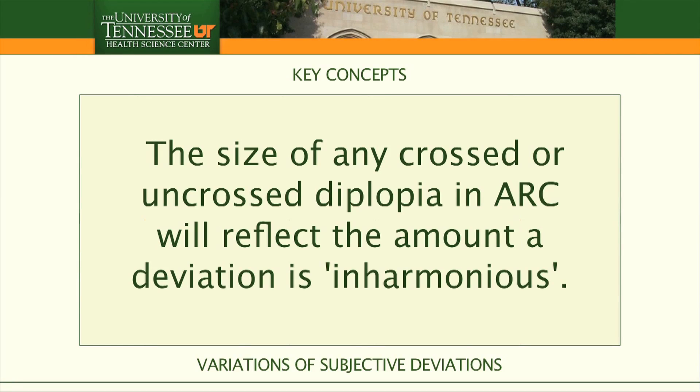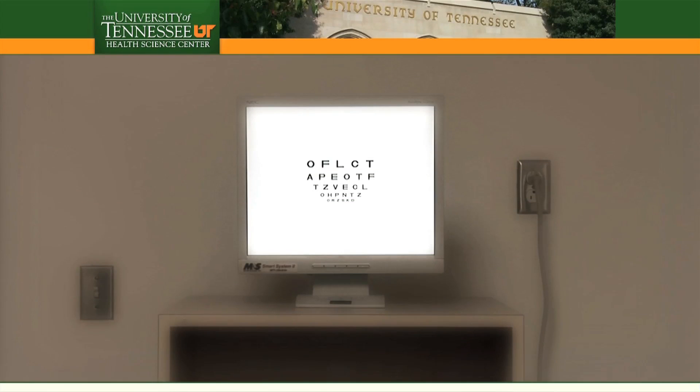The size of any crossed or uncrossed diplopia in abnormal retinal correspondence will reflect the amount a deviation is inharmonious. The more inharmonious vision becomes, the greater the angle of diplopia will be seen.